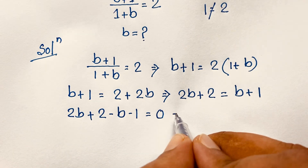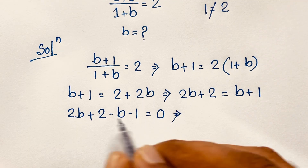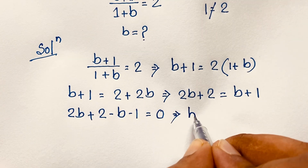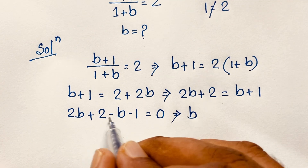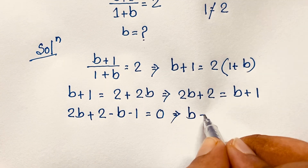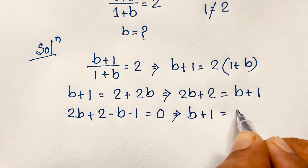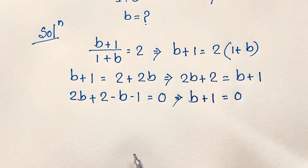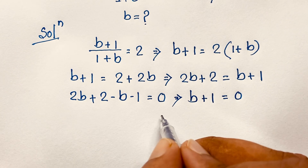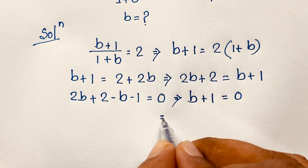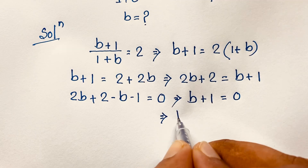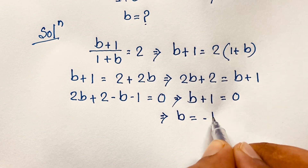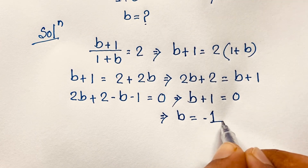So 2b − b gives b, and 2 − 1 gives + 1, so b + 1 = 0. We find our final answer: b = −1.